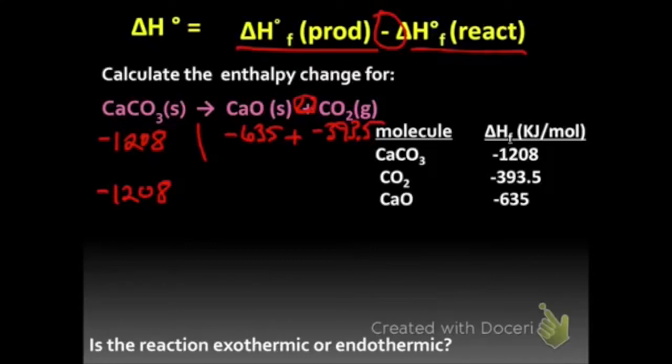And so these are totally separate sides. I'm going to add these together because it's being added here. So on my reactant side, I have negative 1208. And on my product side, I'm going to have negative 1028.5 if I add those together.